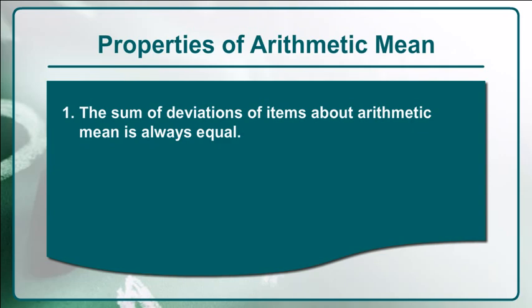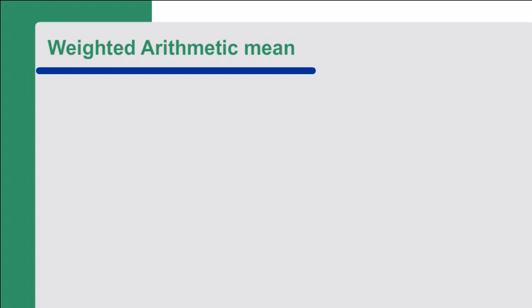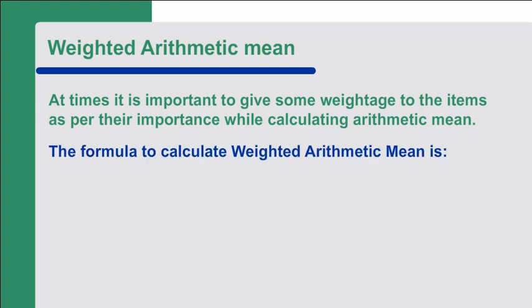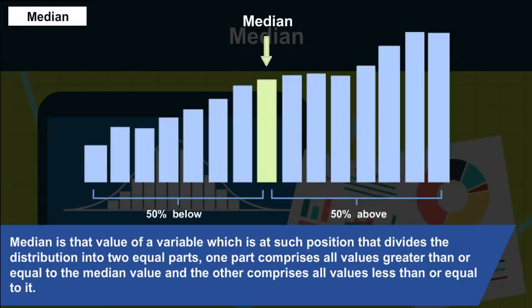Properties of arithmetic mean: (1) The sum of deviations of items about the arithmetic mean is always zero. (2) Arithmetic mean is affected by extreme values — any large value can push it up or down. Weighted arithmetic mean: when items have different levels of importance, the formula is: summation(wx) / summation(w).